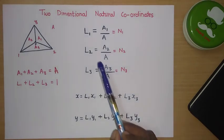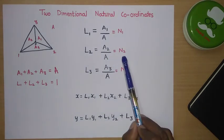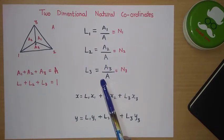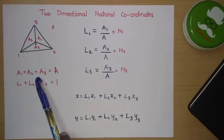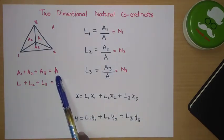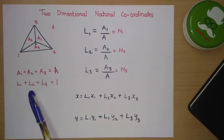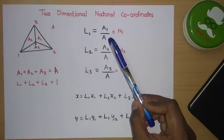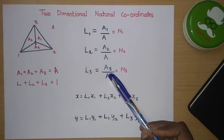Here also, L1 equals shape function N1, L2 equals shape function N2, and L3 equals shape function N3. So these natural coordinates can be used to find the shape functions. From geometry, A1 plus A2 plus A3 equals total area A. From this geometrical relation, L1 plus L2 plus L3 equals 1 — the summation of natural coordinates equals 1, since A1+A2+A3 = A, and A/A = 1.